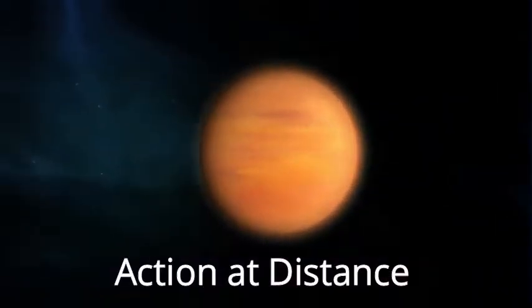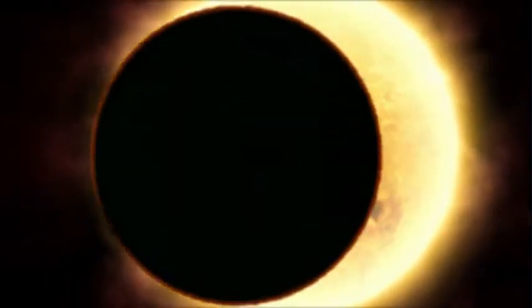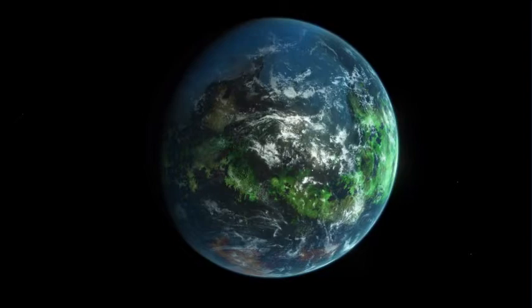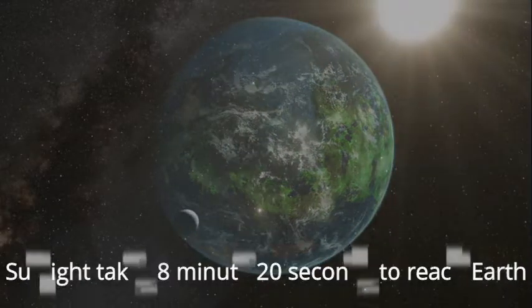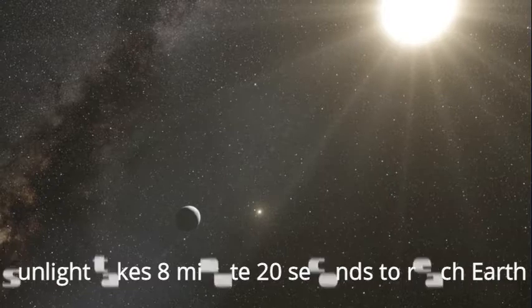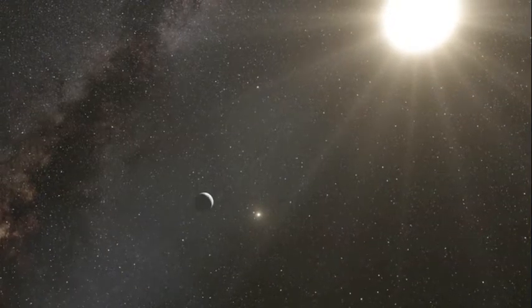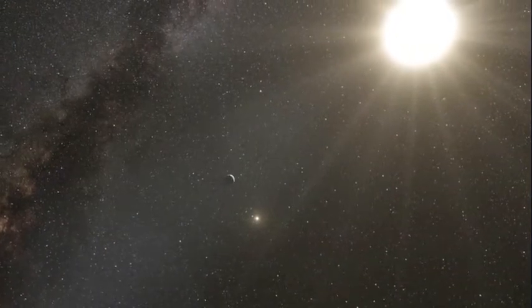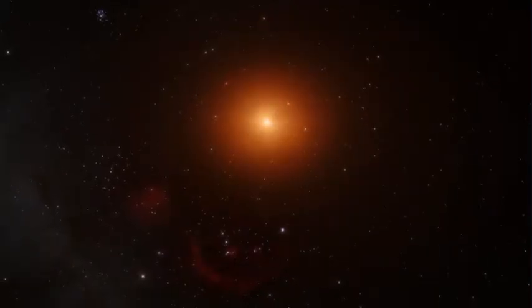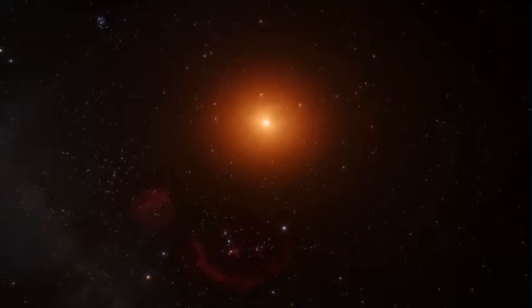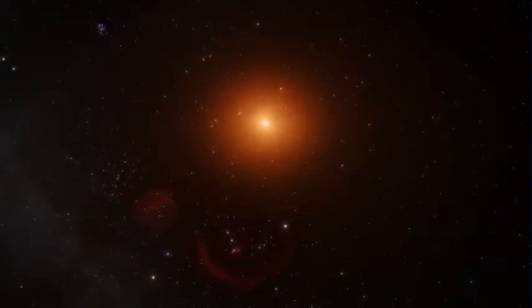Newton was also unsatisfied about action at distance. Action at distance is nothing but what happens with two objects at large distance when they undergo any change. For example, consider sun and earth. Light reaches from sun to earth in 8 minutes. But what about gravity? How much time the gravity will take to reach from sun to earth, or gravity exists without any circumstances, or gravity travels faster than light or slower than light.